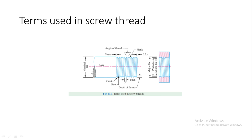Here we can see a picture of a screw thread and the terms associated with it. We have the central axis, the major diameter, and the minimum (minor) diameter. The major diameter is based on the outermost edges of the threads, and the minor diameter is based on the innermost edges. The pitch diameter lies exactly in between. The crest is the top or outermost edge of the thread, and the root is the innermost edge. Slope is the distance between the outermost and innermost edges — the horizontal space along the axis. The angle of the thread is the angle at which the individual helical threads are set on the screw.